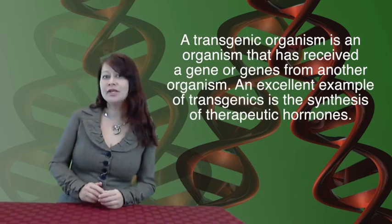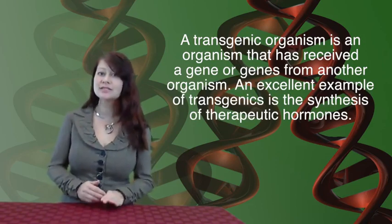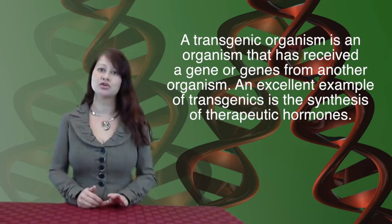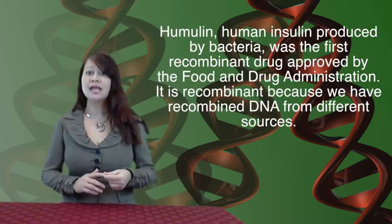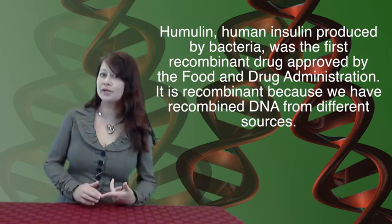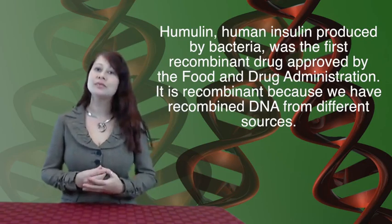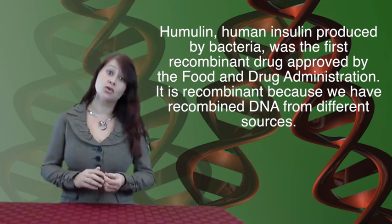One example of how we can use our ability to transfer genes from one organism to another is to synthesize therapeutic hormones. In 1982, Humulin came on the commercial market. Humulin is a human insulin produced by bacteria, and it became the first recombinant drug approved by the FDA. Before Humulin, insulin was very hard to come by because it had to be isolated from animals, which was incredibly expensive, time consuming, and had ethical implications since the hormone had to be isolated from the pancreas of cows and pigs.